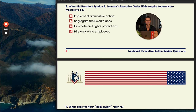Let's look at landmark executive actions. Number eight: what did LBJ's executive order require federal contractors to do? A says implement affirmative action, B is segregate the workplace, C is eliminate civil rights, and D is hire only white employees. Whenever you think about LBJ, think about the Great Society and also affirmative action. The answer is A. B, C, and D are actually segregationist policies that LBJ was not a fan of.